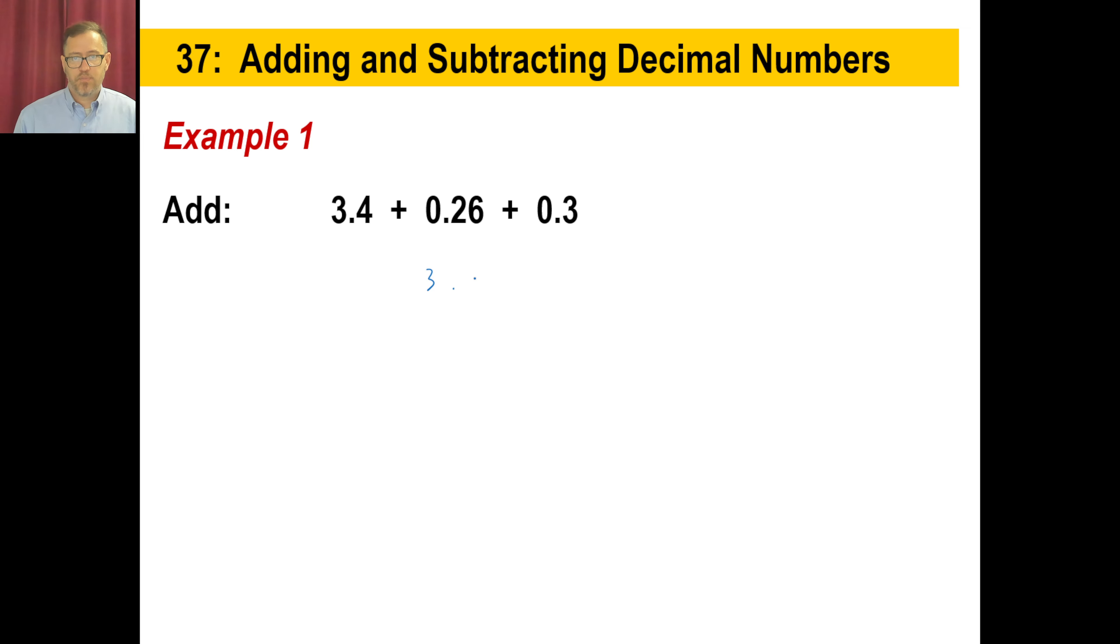Okay. 3.4 is how you're going to write it. 0.26 and then 0.3. All right. All you need to do is add straight down. There's nothing here. If you want to write that, that's okay. By the way, you should notice 3 and 4 tenths, that's how you read that, is the same thing as 3 and 40 hundredths.